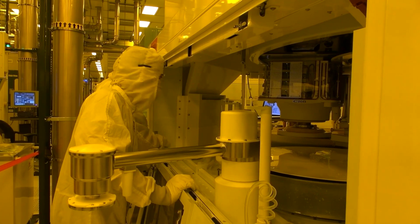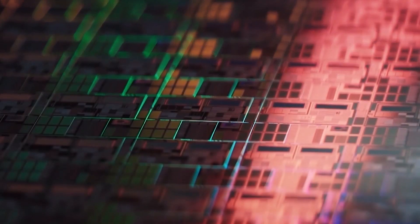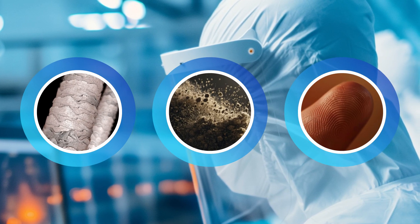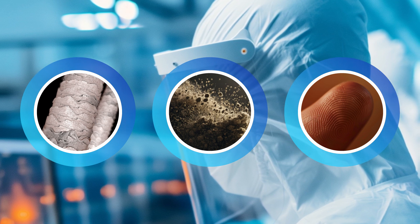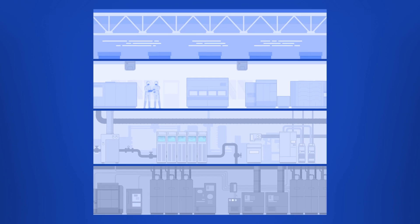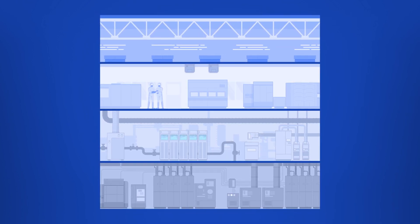Fabs operate under extremely strict conditions that ensure the integrity of the chips produced. A single hair, a foreign particle, or even a tiny flake of skin introduced into the manufacturing process can ruin entire batches of semiconductors. As a result, safety and risk management controls are built into the anatomy of the manufacturing facility.